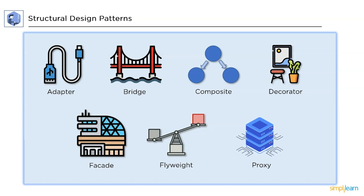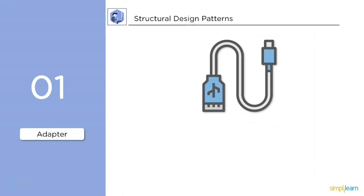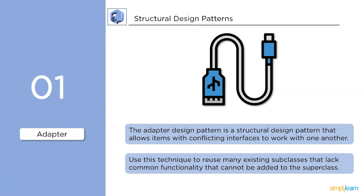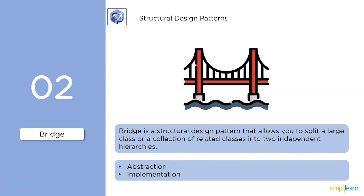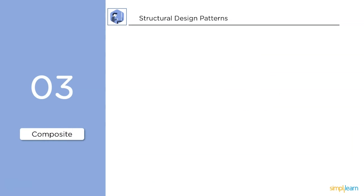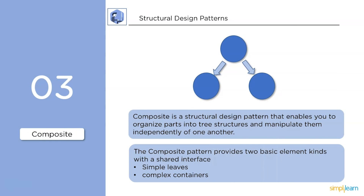The adapter design pattern allows items with conflicting interfaces to work with one another; we use it to reuse existing subclasses that lack common functionality that cannot be added to the superclass. The bridge pattern allows you to split a large class into two independent hierarchies: abstraction and implementation. The composite pattern enables you to organize parts into tree structures and manipulate them independently, providing two basic element kinds with a shared interface: simple leaves and complex containers.